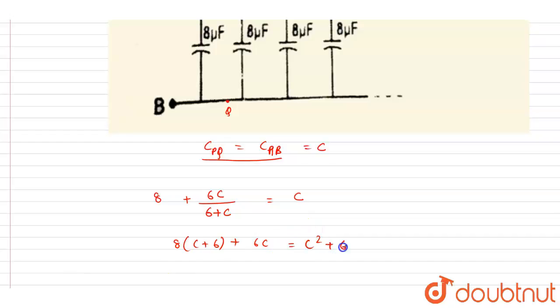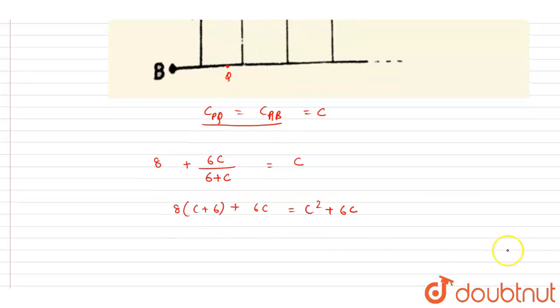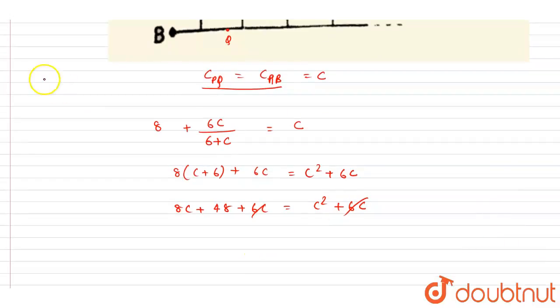So if you see here, 8C plus 8 times 6 is 48. So this 6C and 6C will get cancelled out, and you will write down C squared